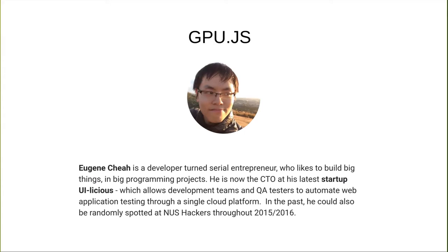The first speaker will be Eugene Chia and he will be speaking about GPU.js. Eugene Chia is a developer turned serial entrepreneur who likes to build big things in big programming projects. He is now the CTO at his latest startup, UiLicious, which allows development teams and QA testers to automate web application testing through a single cloud platform. Let's welcome him.